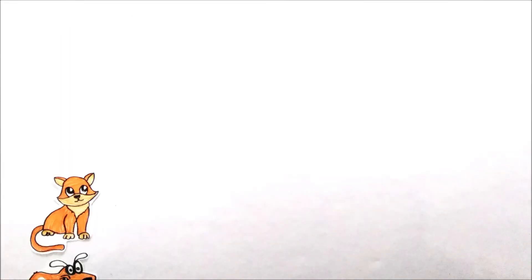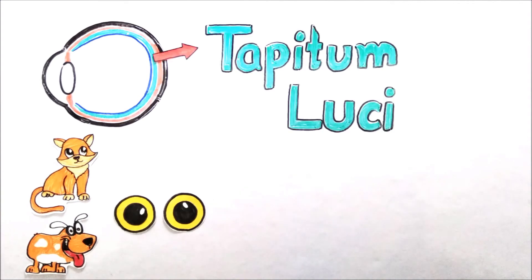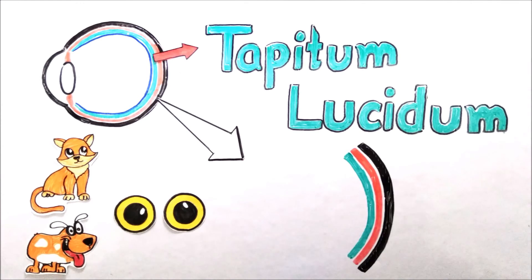You must have seen that many animals like dogs and cats have a mirror-like glow in their eye during night. This is because they have a mirror-like layer behind retina called tapetum lucidum. The light which gets passed through retina is reflected by tapetum, which gives the retina a second chance to sense it.